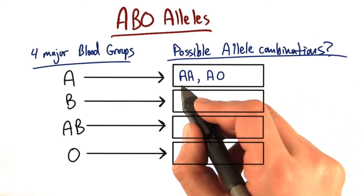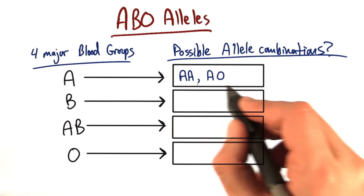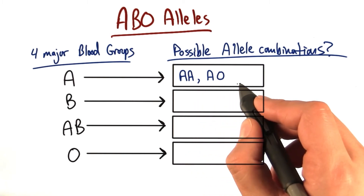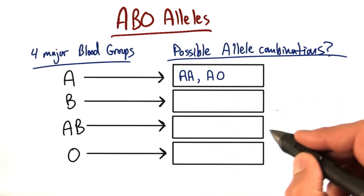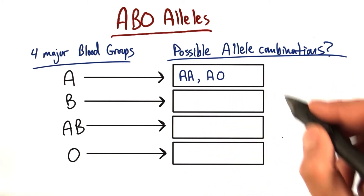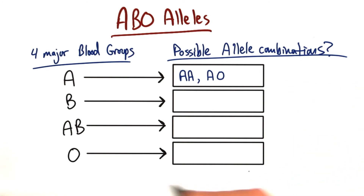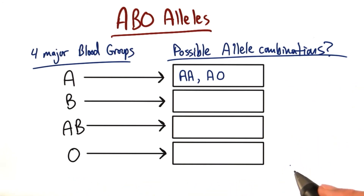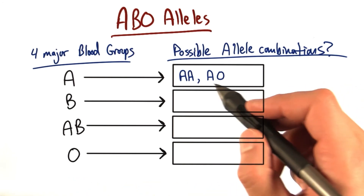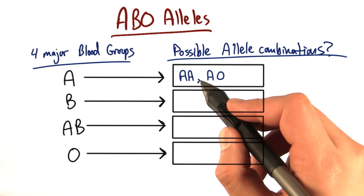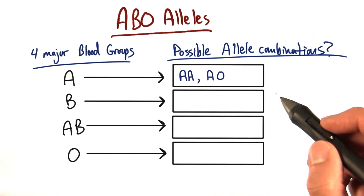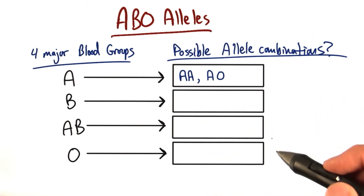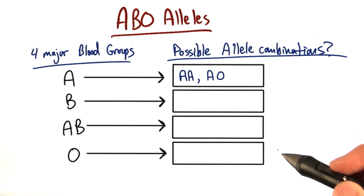So these are the only two possible allele combinations we could have. I want you to fill that in for these other three options here and see if you can come up with the correct allelic combinations. Separate each combination with a comma, and also remember that the order of the alleles doesn't matter.